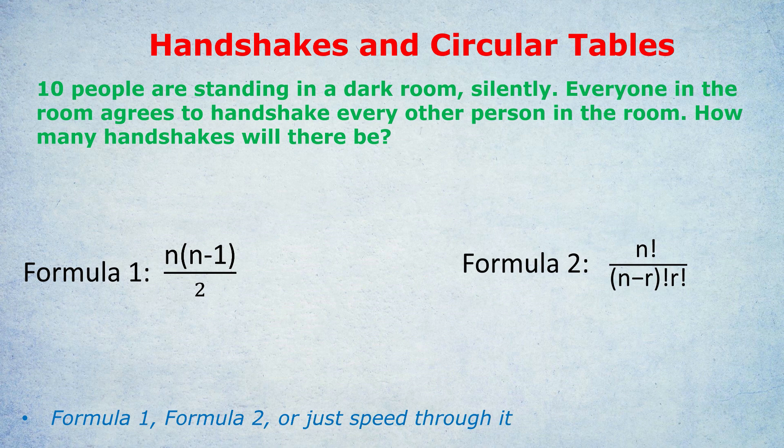All of these answers, by the way, if you plug N as 10 into the formulas, and R for formula two is two because we're choosing two people for a handshake, you'll all get 45 as the answer, no matter which method we use. Now that you've decided on your preferred method, I'm going to give you another question, a harder question, the hardest kind of way they can ask this type of question.